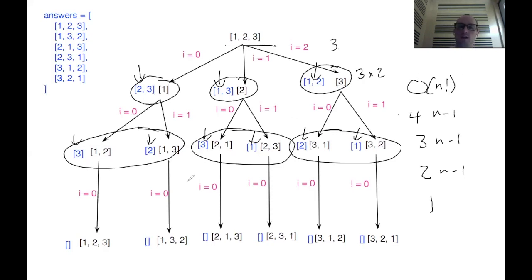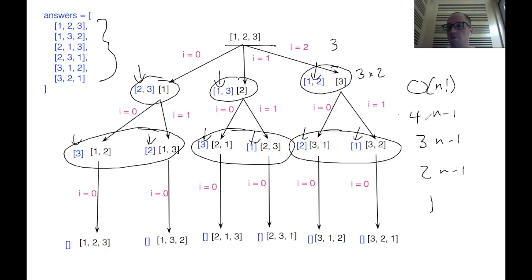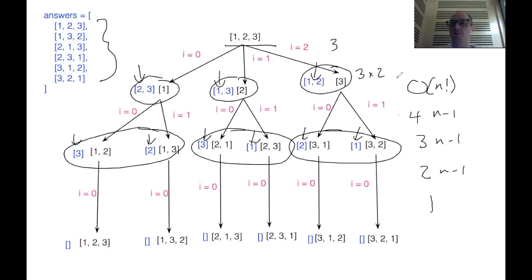So the answer here is six — we have six answers for n equals three. But if we were doing n equals four, we would have four times three, which is twelve, times two, which would be 24 answers. This is a pretty terrible time complexity, but there's no other way to grab all the permutations of this problem.